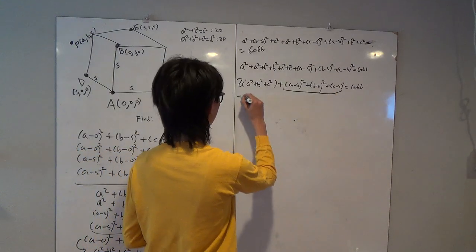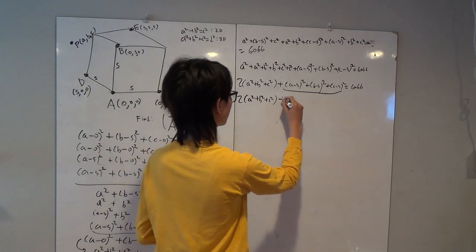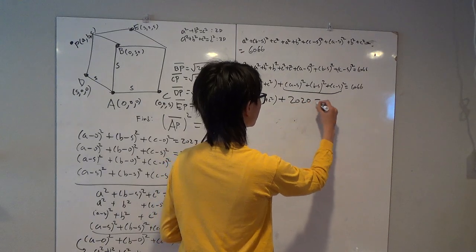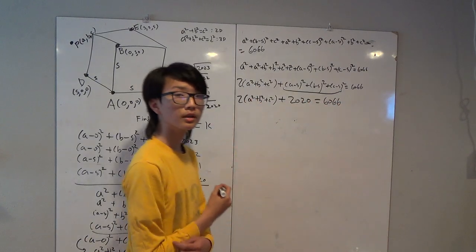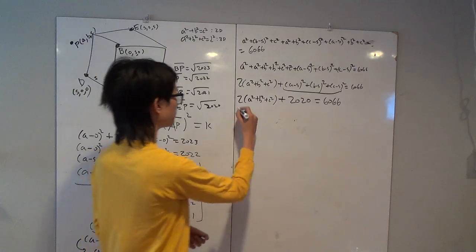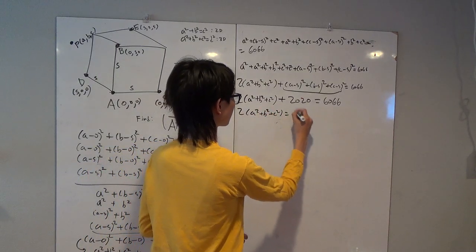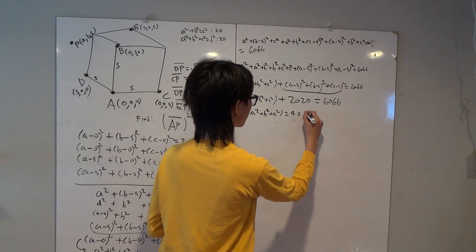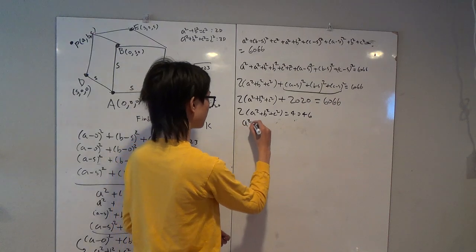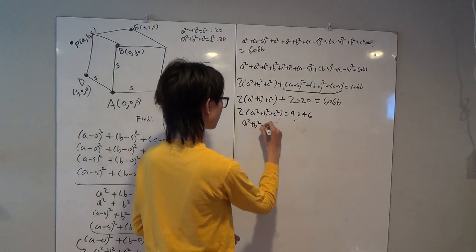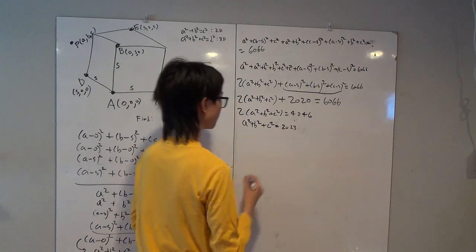And as you can see, the fourth equation gives us exactly the value of (a−S)² + (b−S)² + (c−S)², which is 2020. Substituting, we get 2(a² + b² + c²) + 2020 = 6066, and after dividing both sides by two, we get our answer.